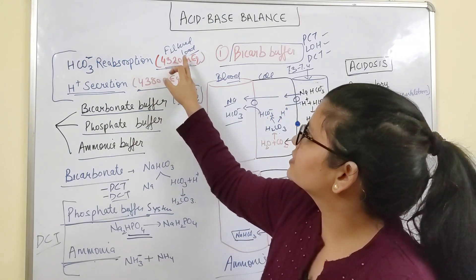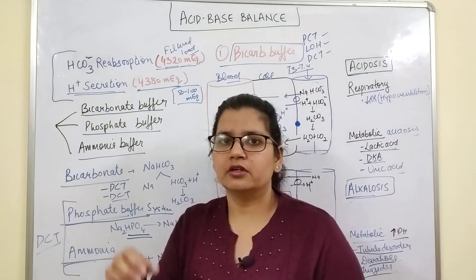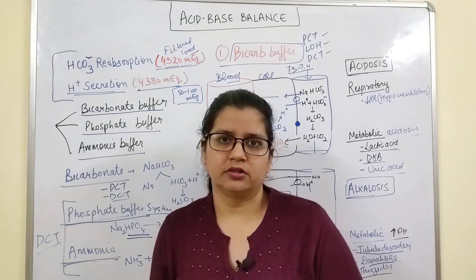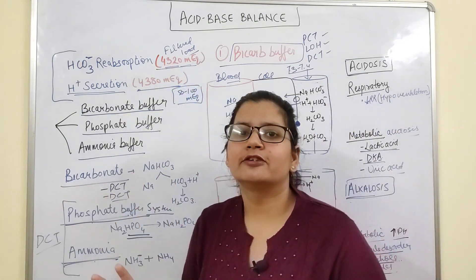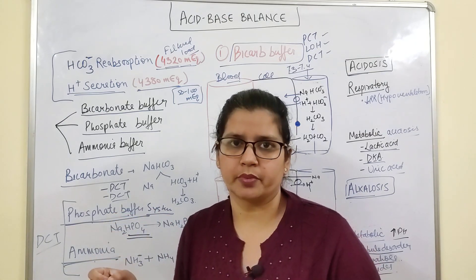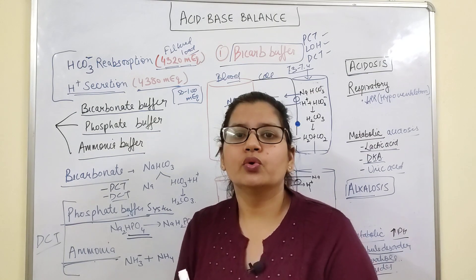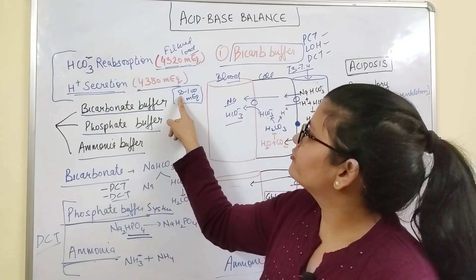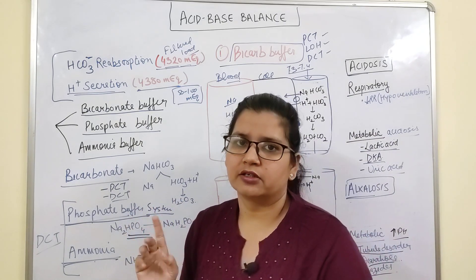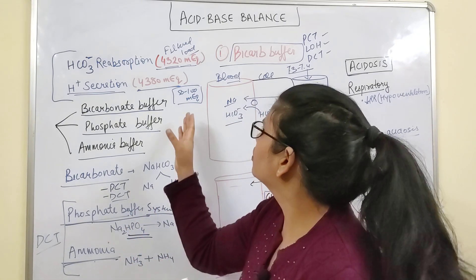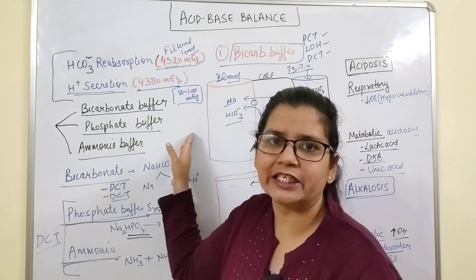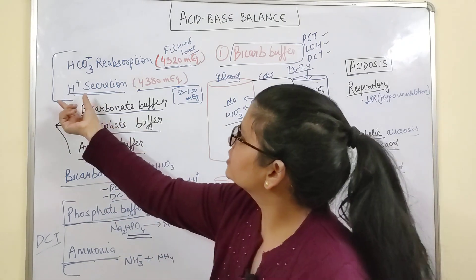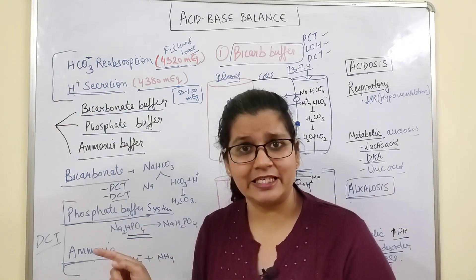When plasma is filtered into the glomerulus and Bowman's capsule, there is a certain filtered load of bicarbonate ions. The kidney reabsorbs approximately 100% of filtered bicarbonate because we need it more in our body. For H+, only 50 to 100 milliequivalents per liter is secreted and excreted from the kidney; the rest is used in HCO3- reabsorption.